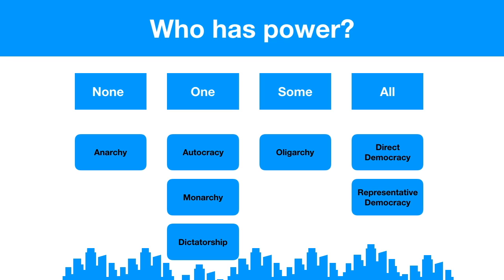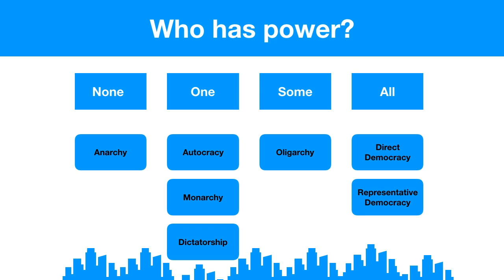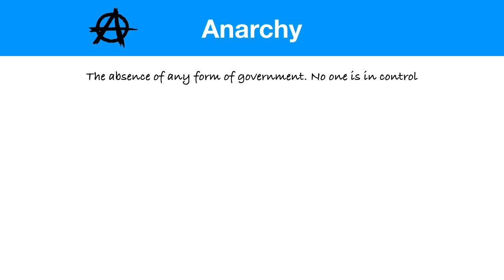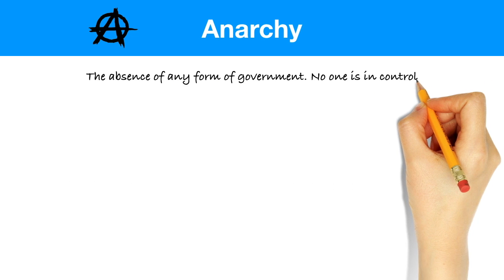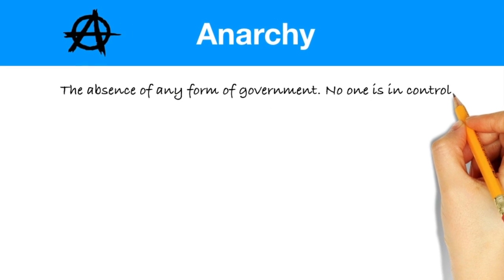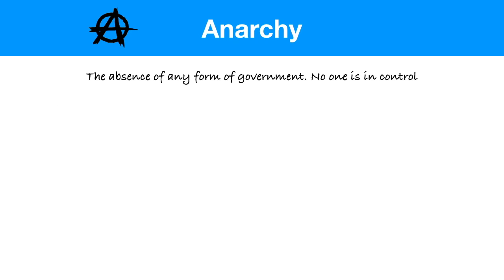Looking at this chart, we see that no one might be in charge, one person might be in charge, a few or some might be in charge, or everybody is in charge. You need to know every single one of these to pass your EOC. We'll kick it off with when no one is in charge, which we call anarchy — the absence of any form of government or authoritative control. For our civics purposes, anarchy is simply a form of government when no one is in charge.